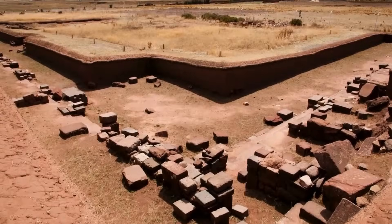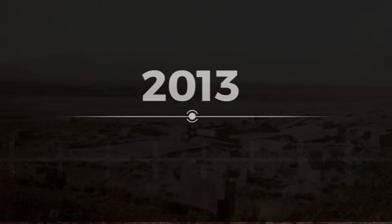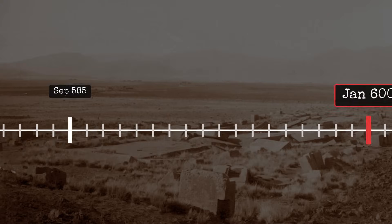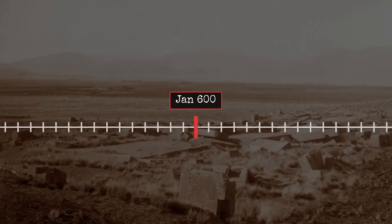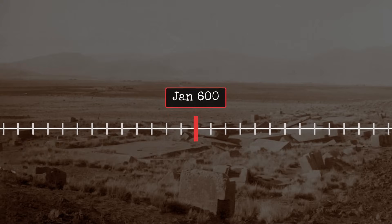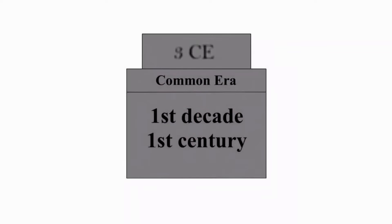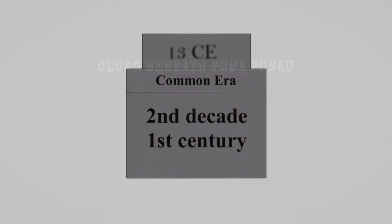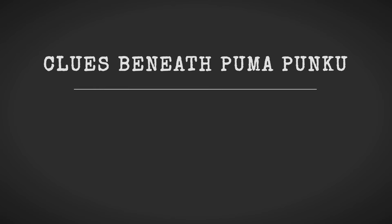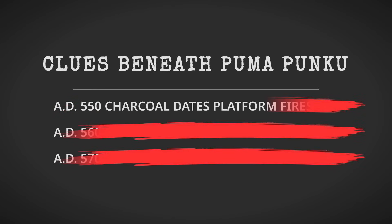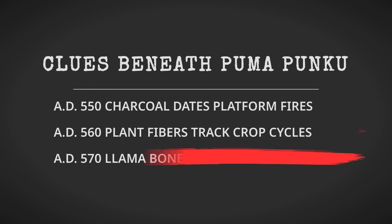To understand the questions swirling around its blocks, we first need to anchor the site in time. Decades of excavation and radiocarbon dating have converged on a window for Puma Punku's first major construction, between AD 536 and 600. This estimate comes not from the stones themselves, but from organic remains—bits of charcoal, plant matter and bone—buried deep within the mound fill beneath the platform.